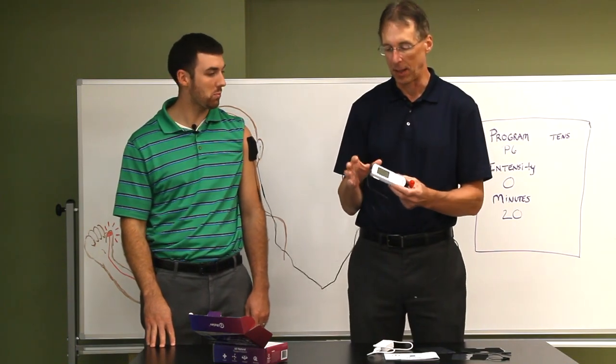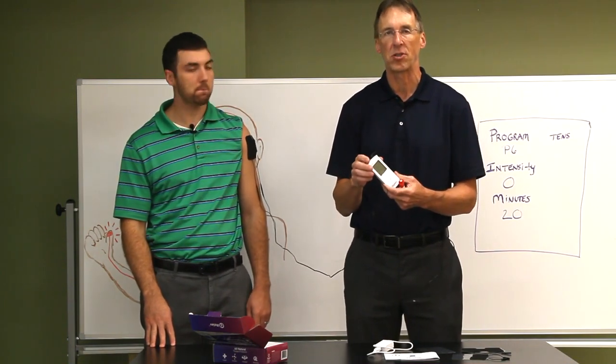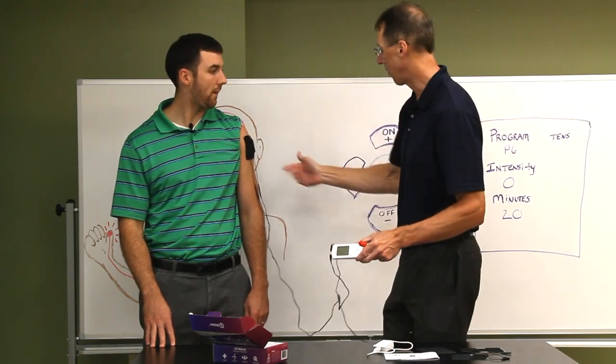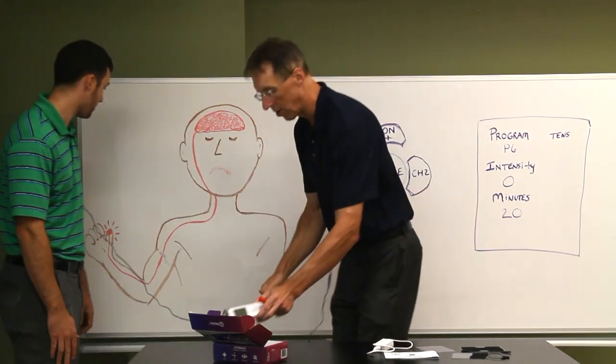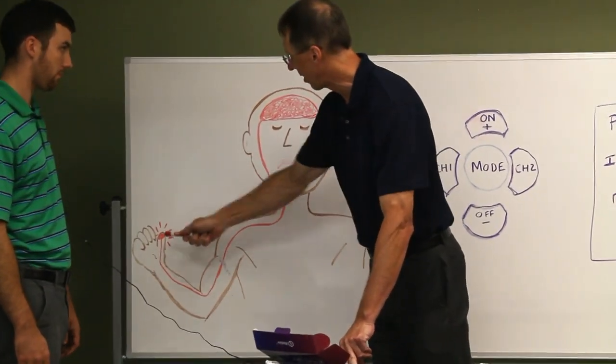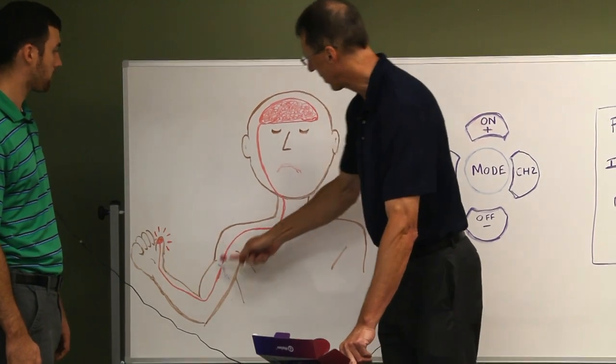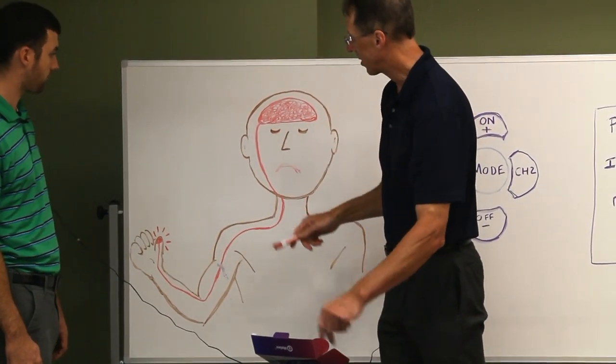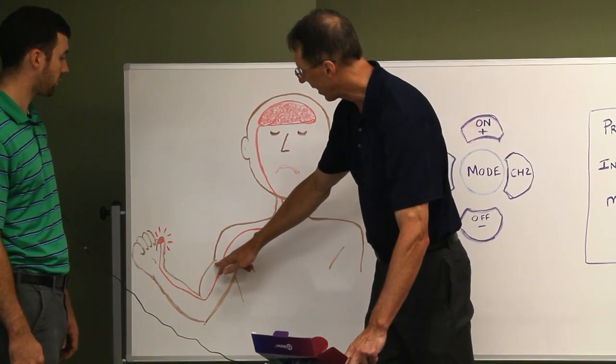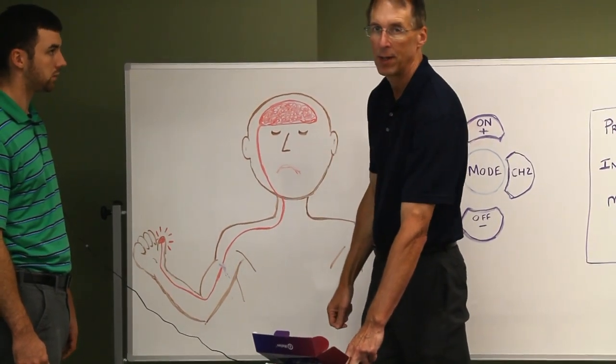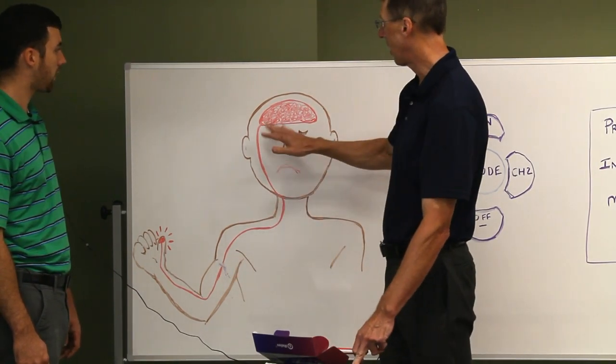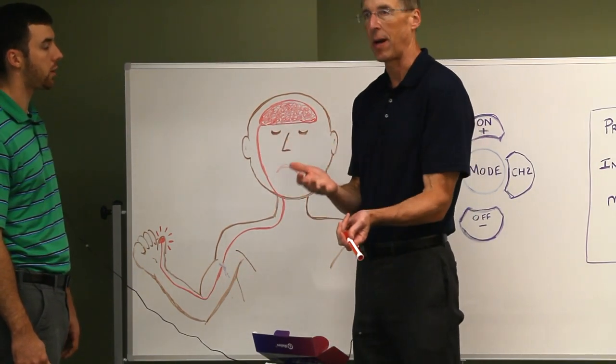So anyway, the way this thing works is a TENS unit - it's transcutaneous electrical nerve stimulation. And we got a picture here of how it actually works. Let's say you're hammering and you hit your thumb. The pain message is sent up to your brain. What the TENS unit does is it actually stimulates some different nerves that cuts off that pain pathway. So it's called the gating theory, but it actually cuts off the pain and so you feel less pain.